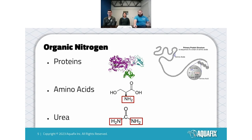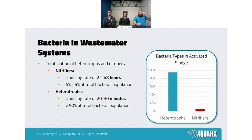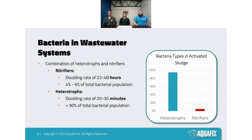That ammonia needs to be removed via nitrification. When we talk about nitrification, we're talking about a very small group of organisms in the overall system. Throughout the slides, we'll refer to general organisms in your wastewater plant that are not nitrifiers as heterotrophs — microorganisms that utilize organic energy sources. Nitrifiers, by contrast, are autotrophs: they utilize inorganic sources like ammonia for their energy.